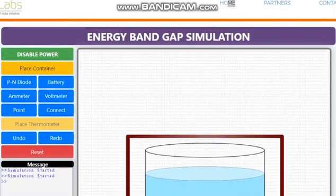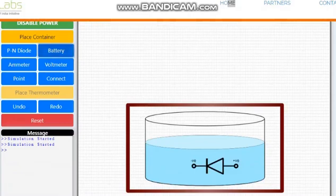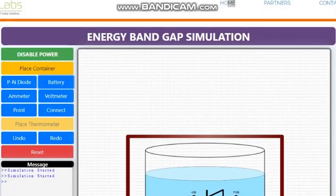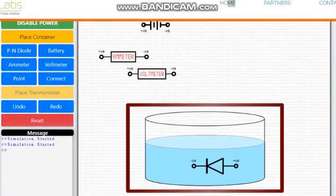Click on the container apparatus and place it in the space provided. Then select the diode and insert it into the vessel. Select a battery, place it, then select and place the ammeter and voltmeter. After placing all components, you need to connect the circuit.